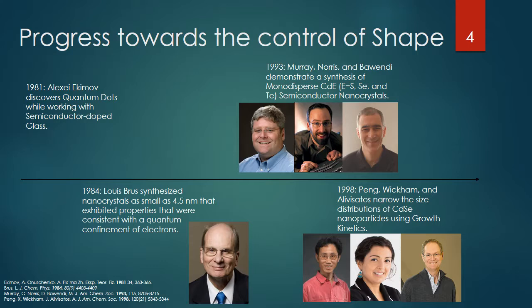Moving from 1993 to 1998, we come to three of the authors of the paper I'm going to discuss. This paper came out two years before they found the shape control synthesis. In it, they basically outlined their method of making monodispersed cadmium selenide particles.